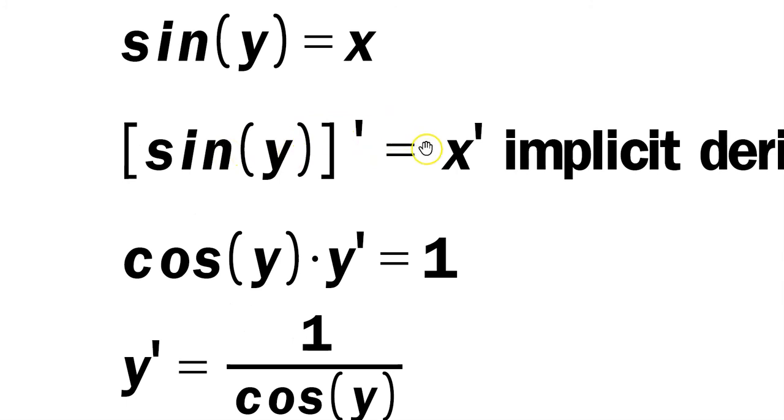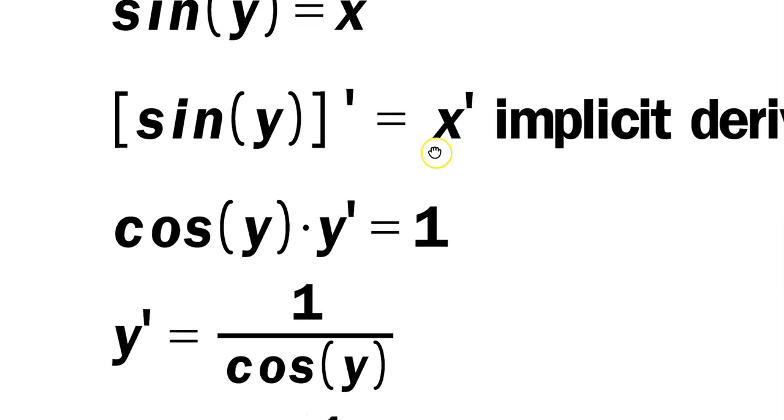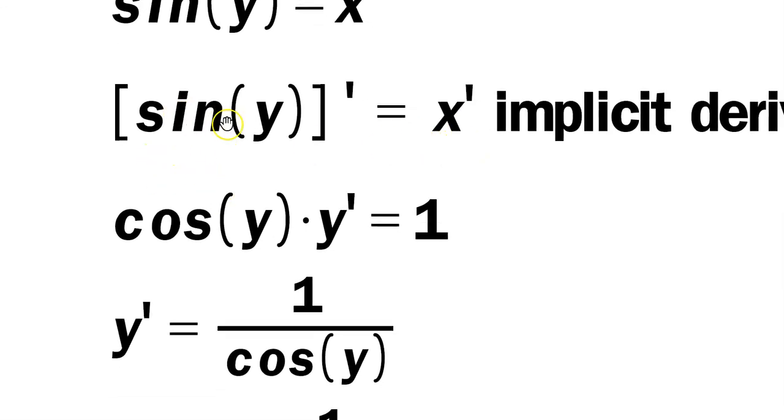We can do sine of y differentiated equals x differentiated. The primes mean differentiate. Now, when you do implicit derivatives, it works like this. You have to use the chain rule.